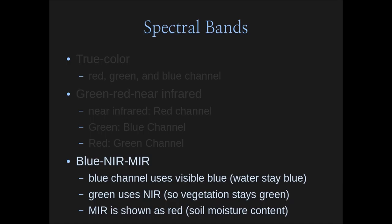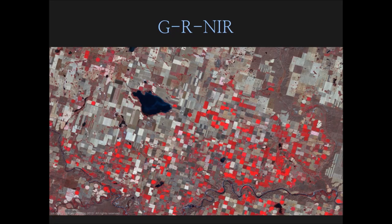There's also a third common band combination: blue, near-infrared, and mid-range infrared. The blue channel stays blue, so water stays blue — which makes sense. We assign the green channel to near-infrared, which means vegetation shows up green — intuitive. The mid-range infrared is assigned to the red channel; soil has different reflectivities in mid-range infrared based on its water content, so you get soil water content data from what appears in the red channel.